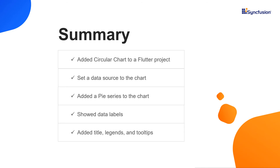That's it. Let me summarize the main points of this video. You saw how to add the Syncfusion Flutter circular chart widget to a Flutter project. You learned how to set a data source to the chart and plot the data as pie, donut, and radial bar series. You also learned how to show data labels, add a title, legends, and tooltips in the circular charts. You can download this working example from the GitHub link and the documentation link in the video description below. You can also check if you are eligible for our community license, which gives you a free license key to use our Flutter products.